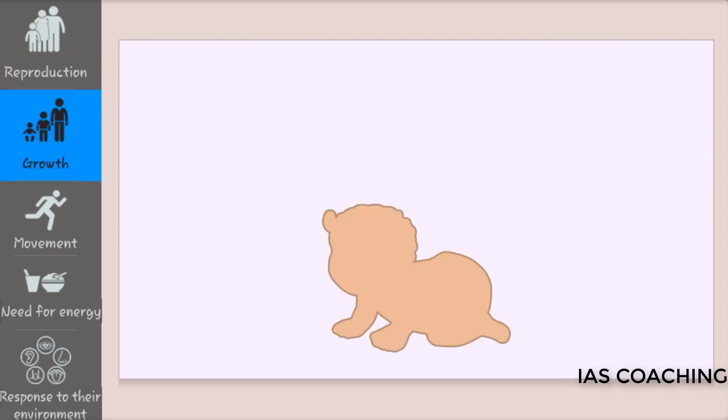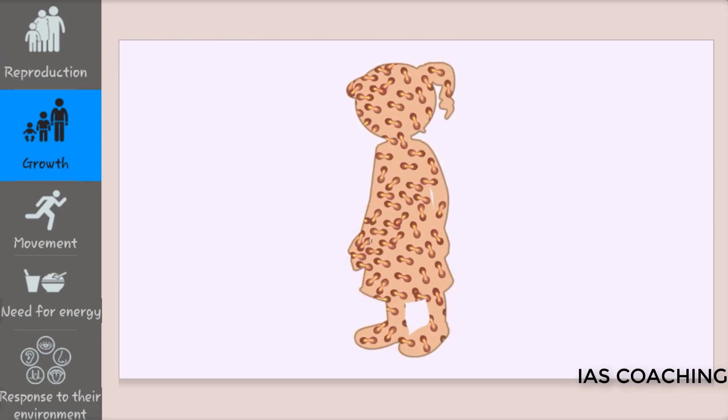Entire organisms grow and develop by going through the cell cycle again and again. For example, blood cells divide and multiply and add more bulk to the body making it larger.